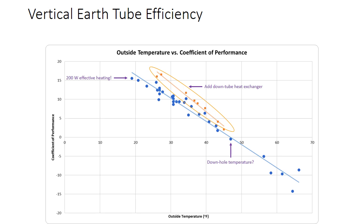Let's look at the coefficient of performance over all the measurements that we took on our earth tube over a five day period. The blue dots, first look on the left side of the plot. When the outside temperature, which is plotted on the horizontal axis, gets down below 20 degrees, that coefficient of performance is up over 15. That works out to over 200 watts of effective heating, which is pretty impressive.